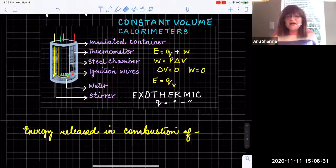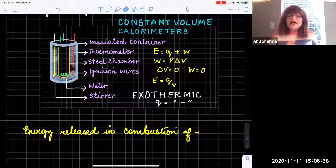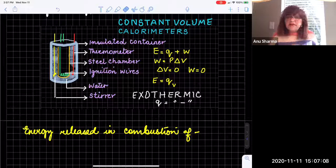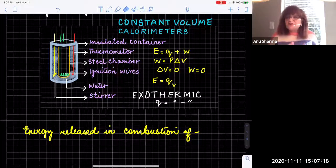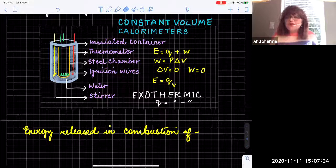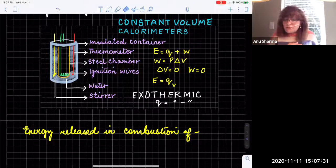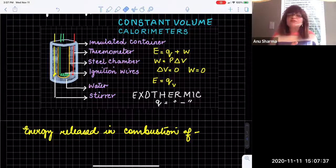This is the makeup of the constant volume calorimeter. According to the first law of thermodynamics, the amount of heat and the work done by the system equals the energy of that particular reaction. But since the gases are perfectly enclosed, they are not doing any work — even though they want to expand, they can't; they're trapped inside. So there is no change in volume, which is why it is called a constant volume calorimeter. The change in volume is zero, and when the change in volume is zero, the work done is zero because work is P times delta V.